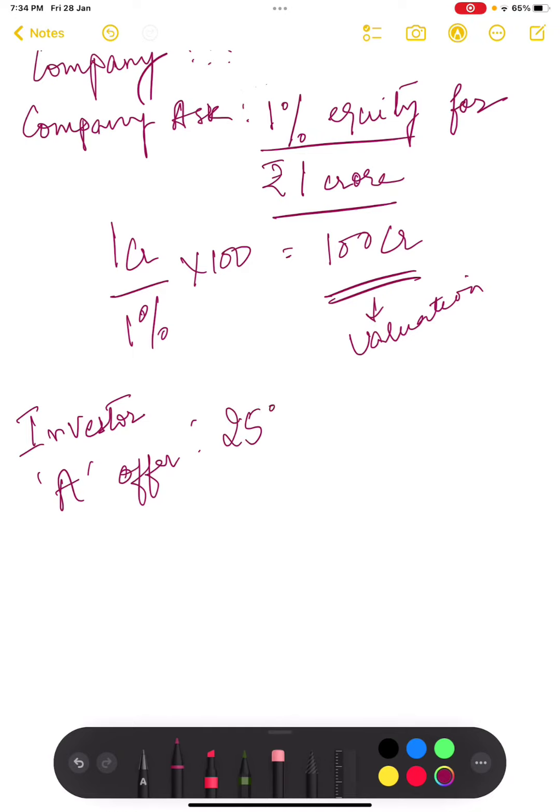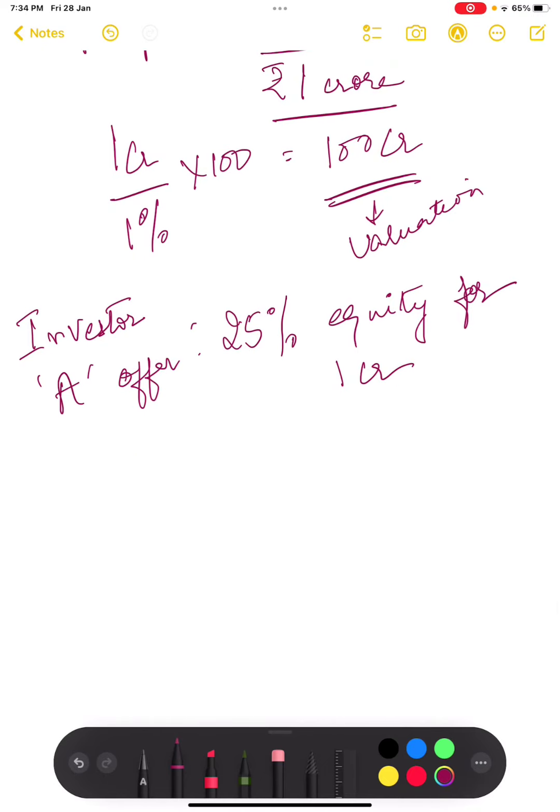If they offer 25% equity for 1 crore, then how will you calculate? So we calculate 1 crore divided by 25% multiplied by 100.